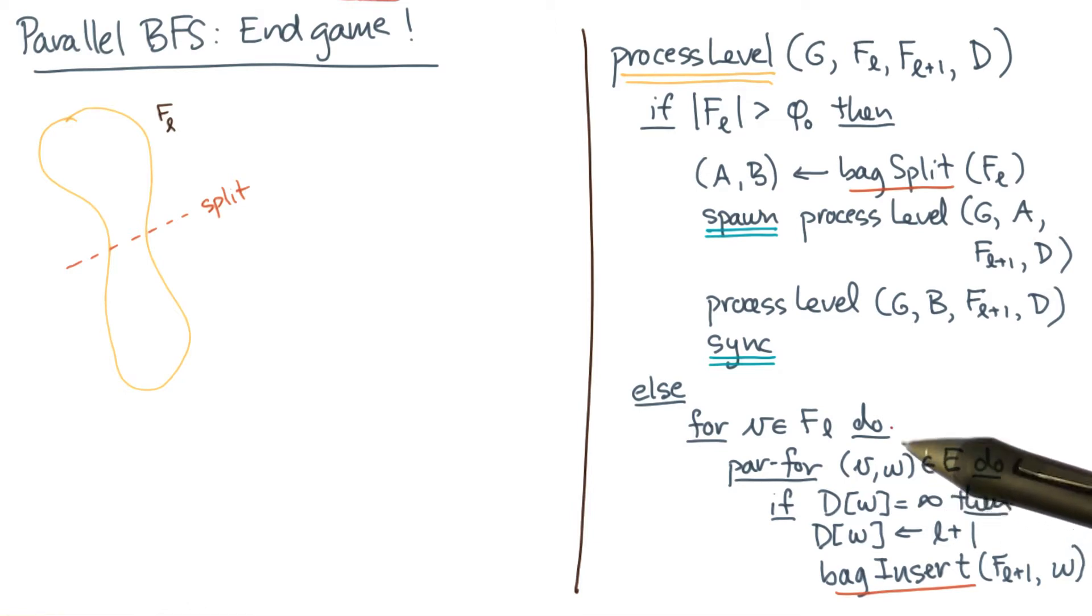I said the base case was the same as the sequential algorithm, but I pointed out this one difference. The difference is this neighbor loop. Notice that I'm iterating over the neighbors using a parallel for instead of a conventional for.